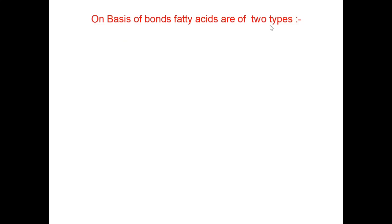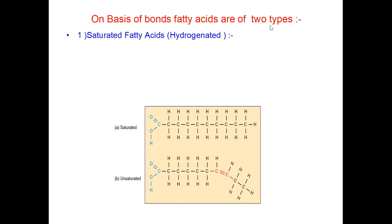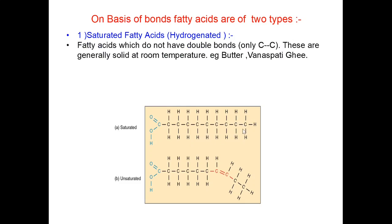On the basis of bonds, fatty acids are of two types. First one are the saturated fatty acids or also known as hydrogenated. Look at the diagram here. All the bonds are satisfied with hydrogen. That is why hydrogenated and saturated. Fatty acids which do not have double bonds. These are generally solid at room temperature. For example, butter and vanaspati ghee.